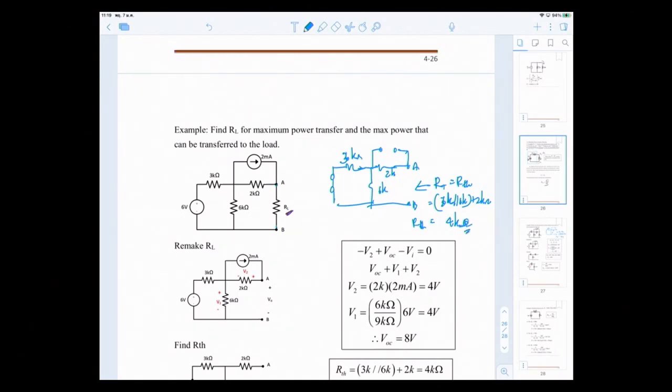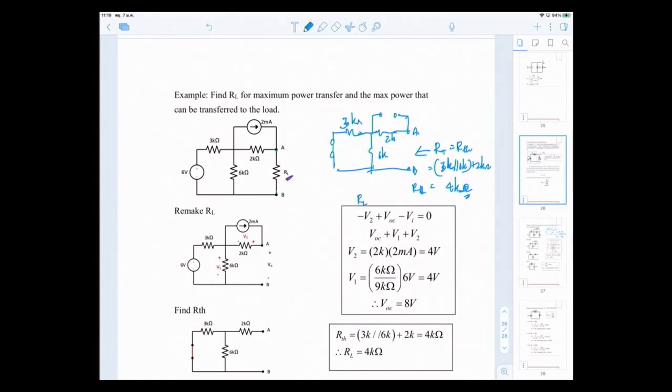To have maximum power transfer, your RL must be equal to RTH, so equal to 4K ohm. So this is your RL. Now, we want to find VTH to be able to find maximum power transfer to RL. I'm going to find now my VTH.